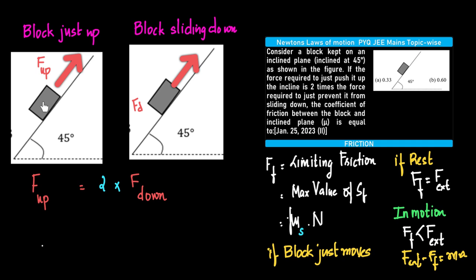In both these cases, the external force is applied upward along the incline. To push the block up, F external is directed up the incline; to prevent sliding down, F external is also directed up the incline. To distinguish between them, we use the terminology F_up and F_down. According to the question, F_up equals two times F_down.